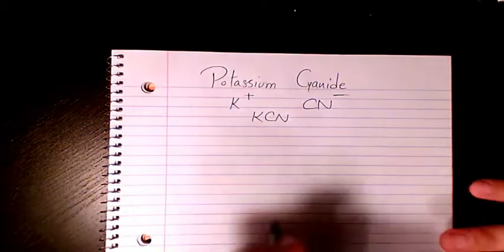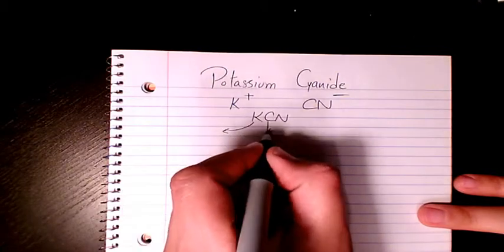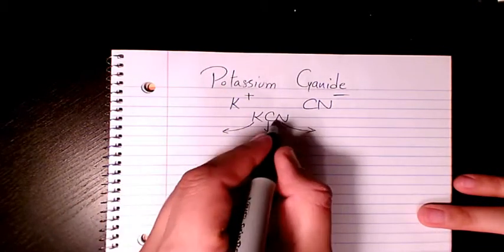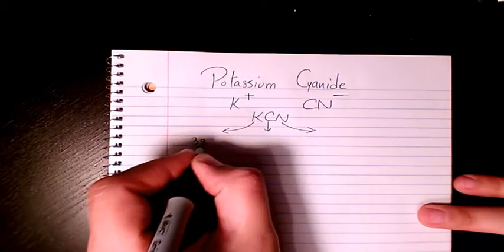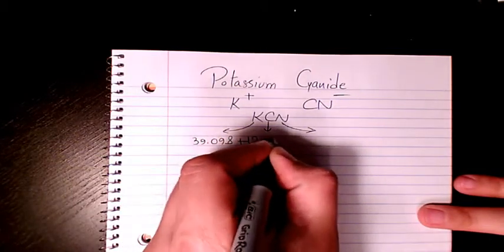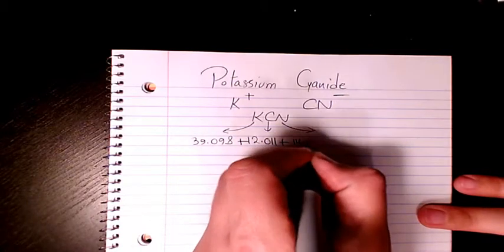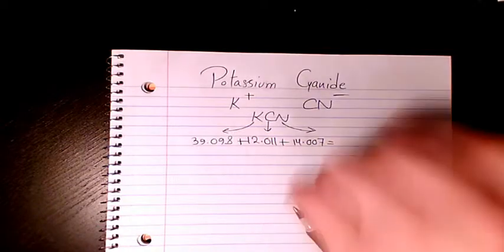And now if I want to find out the molar mass, I need to find out the atomic mass of each of these elements. Since we have one from each, we just need to add them. So potassium is 39.098 plus carbon is 12.011, nitrogen is 14.07.